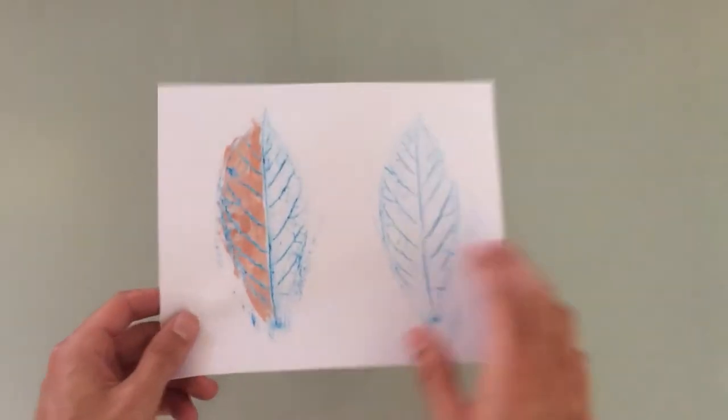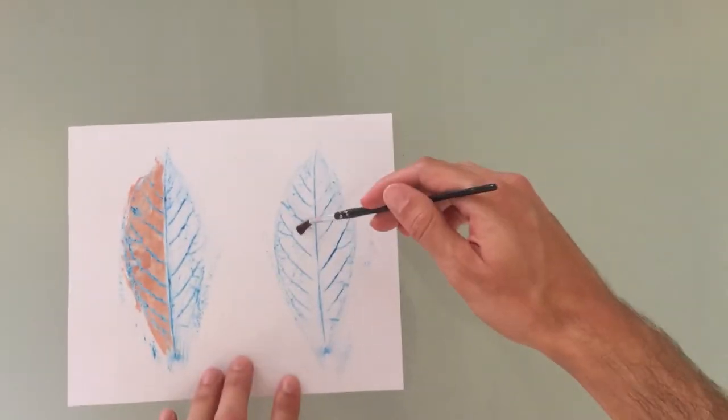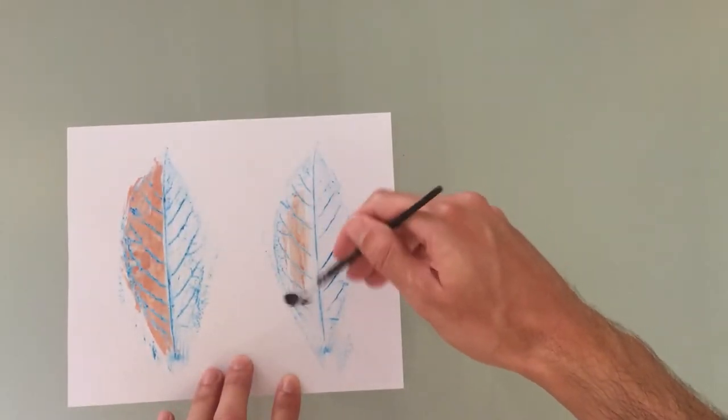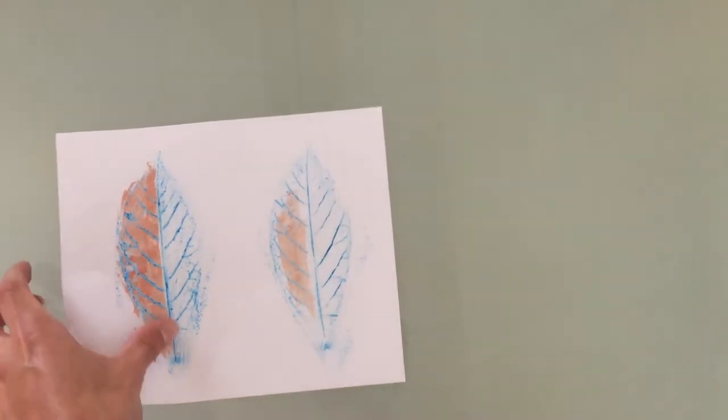A second idea you can do is add watercolor paint to your leaves or to your paper canvas. If you used crayons, the watercolor will paint around your drawing. This is called a wax resist and is because crayons are made from wax and wax repels water.